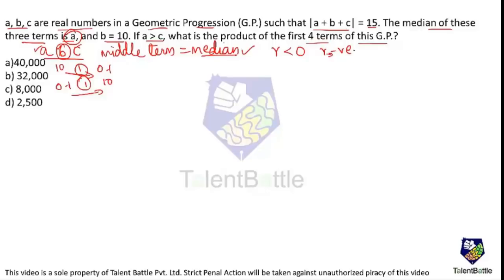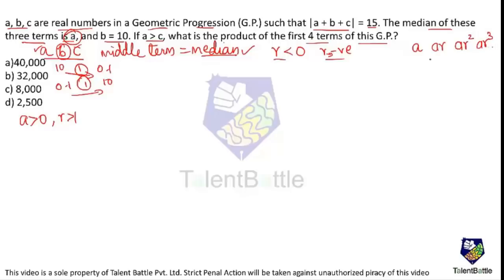This happens because the common ratio r is less than zero — the common ratio is negative. I'll prove why we make this assumption. If a > 0 and r > 1, the GP is written as: first term a, second term ar, third term ar², fourth term ar³, and so on. Before 'a', the term is a/r, and before that a/r².